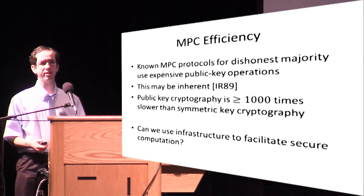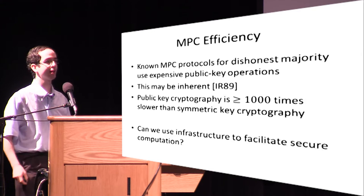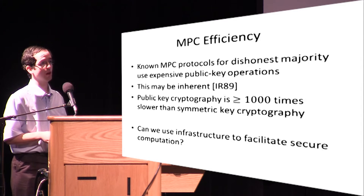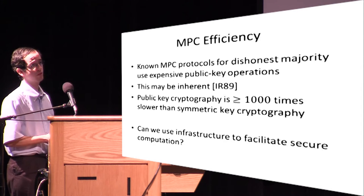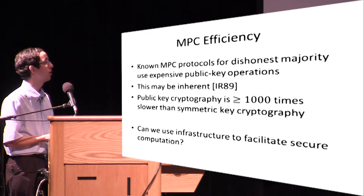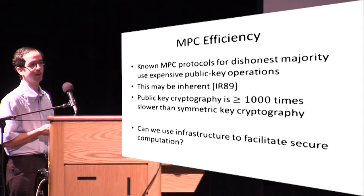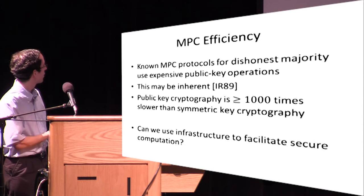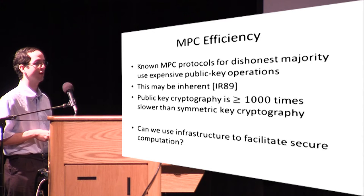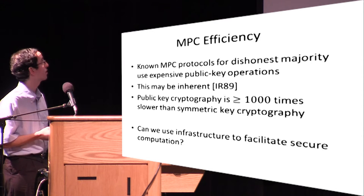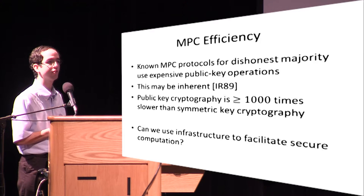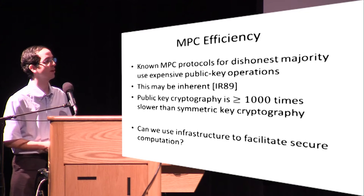In order to achieve oblivious transfer, the protocols for secure multi-party computation in the dishonest majority setting rely on public key operations, which are substantially slower than symmetric key cryptography. There's evidence that this dependence on public key operations may be inherent, in light of the result of Impagliazzo and Rudic, that we cannot obtain oblivious transfer from one-way functions in a black-box way. The question we ask is whether we can improve the efficiency of multi-party computation by relying on some kind of special infrastructure between the parties.